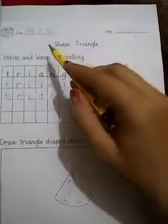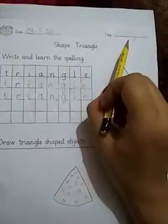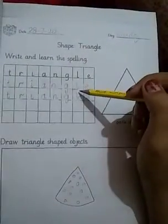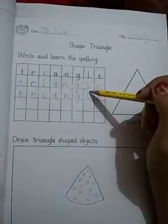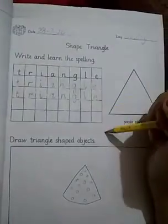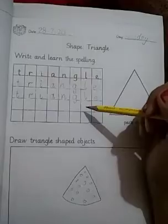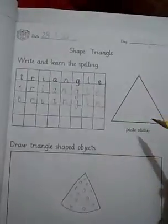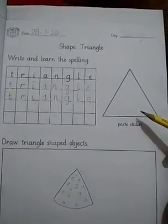You have to draw the triangle shaped object. Now this is today's work. First write down date, do the spelling practice of triangle four times: 1, 2, 3, 4. You have to fill these two lines.